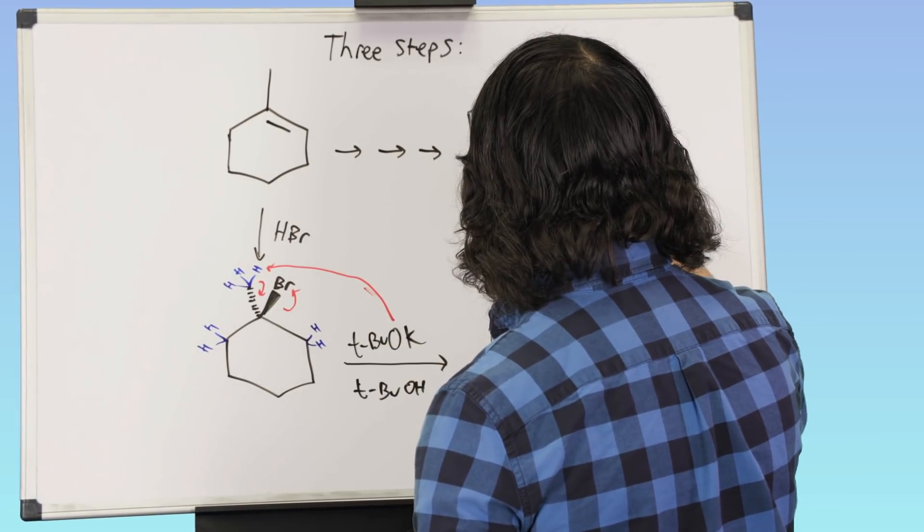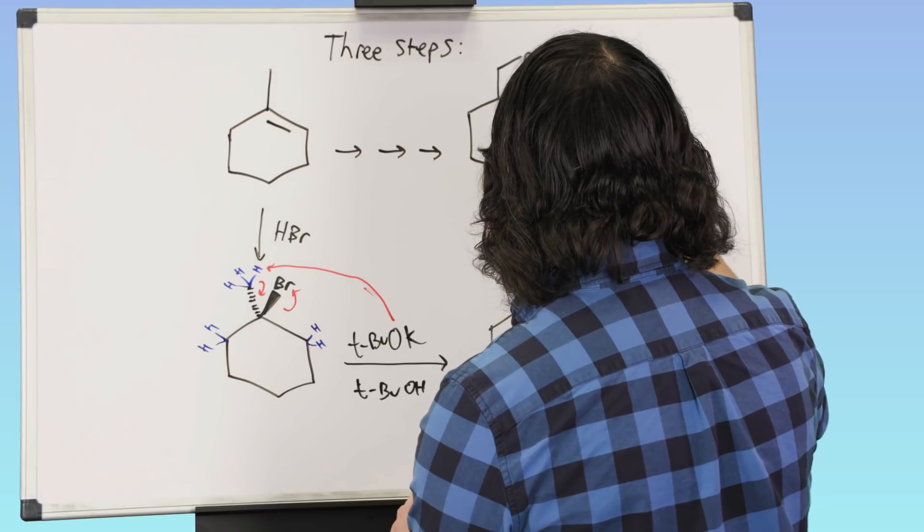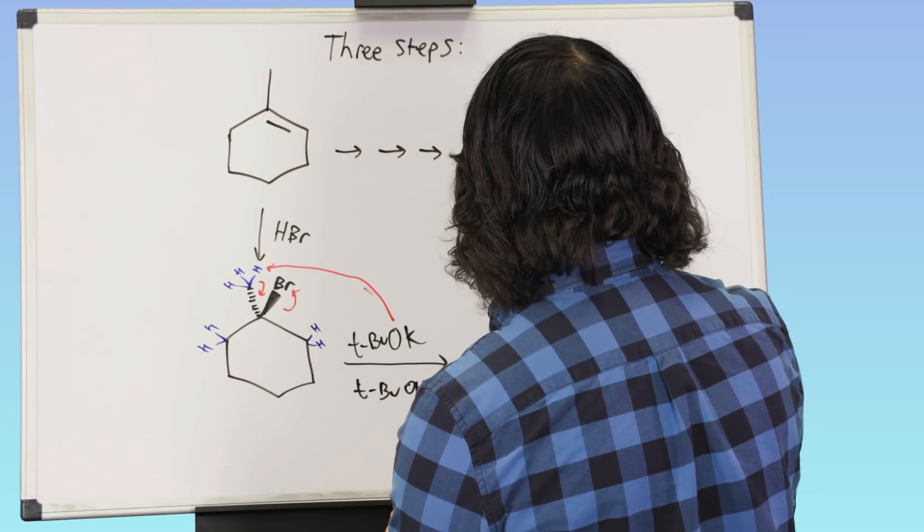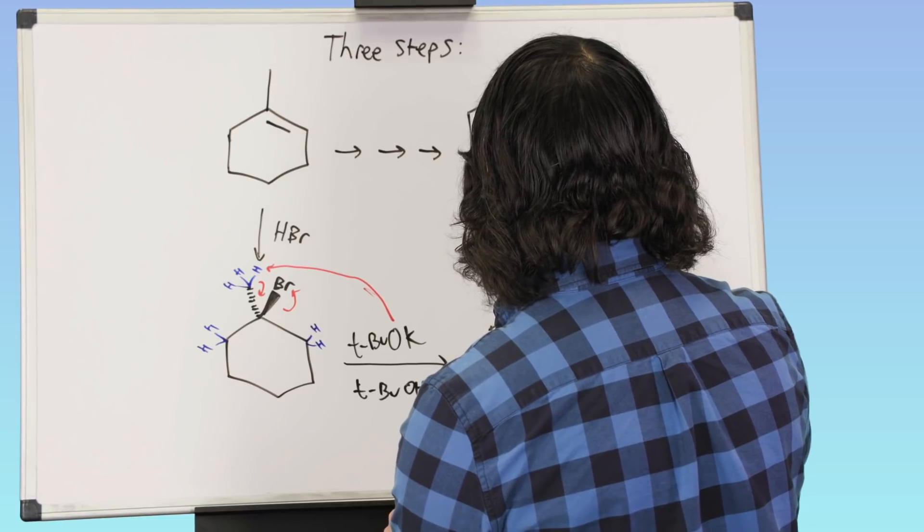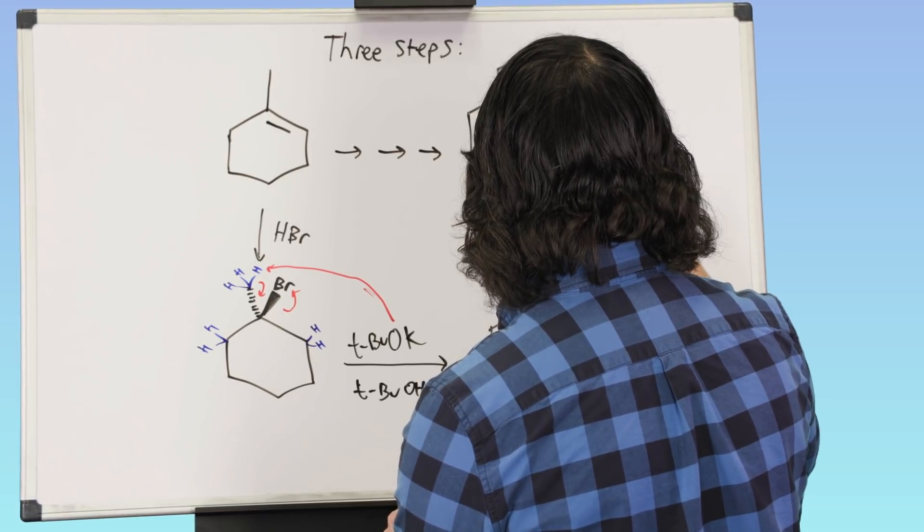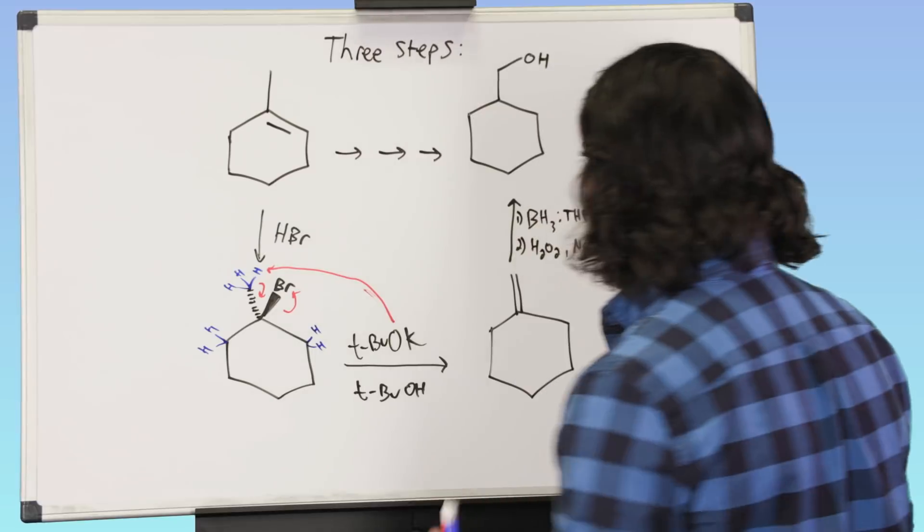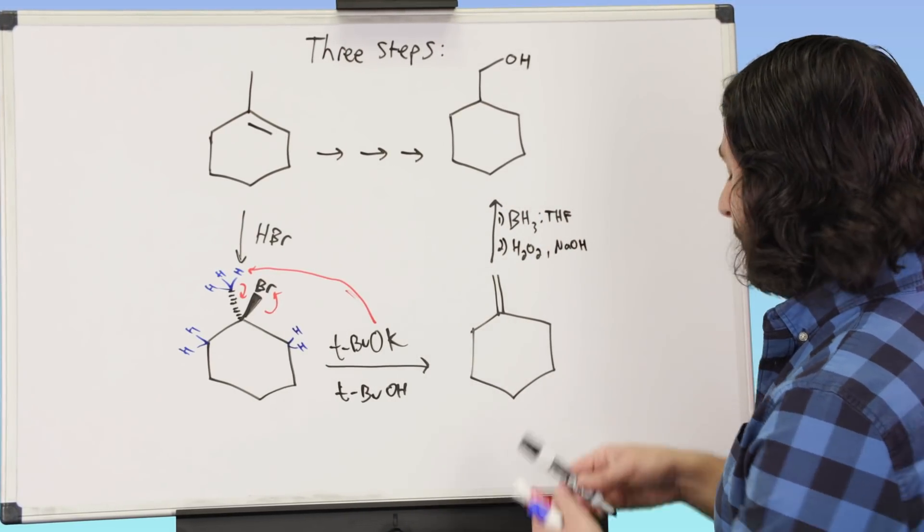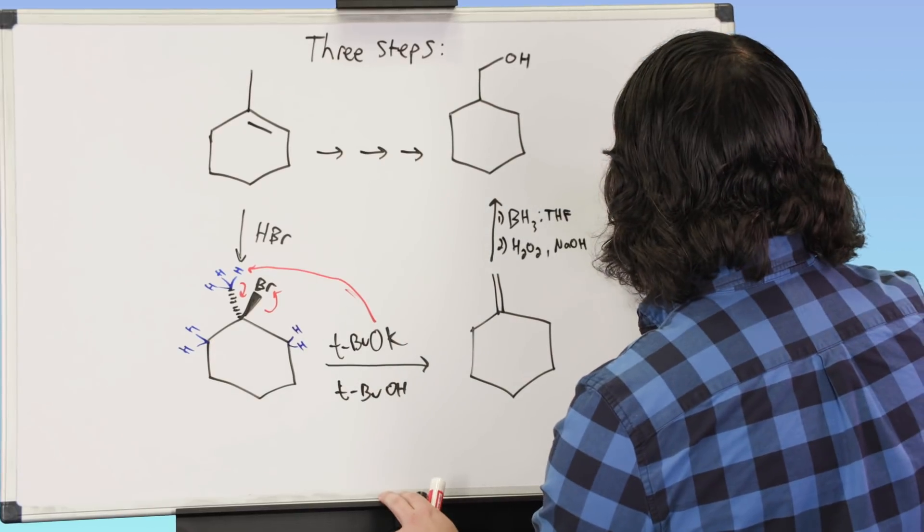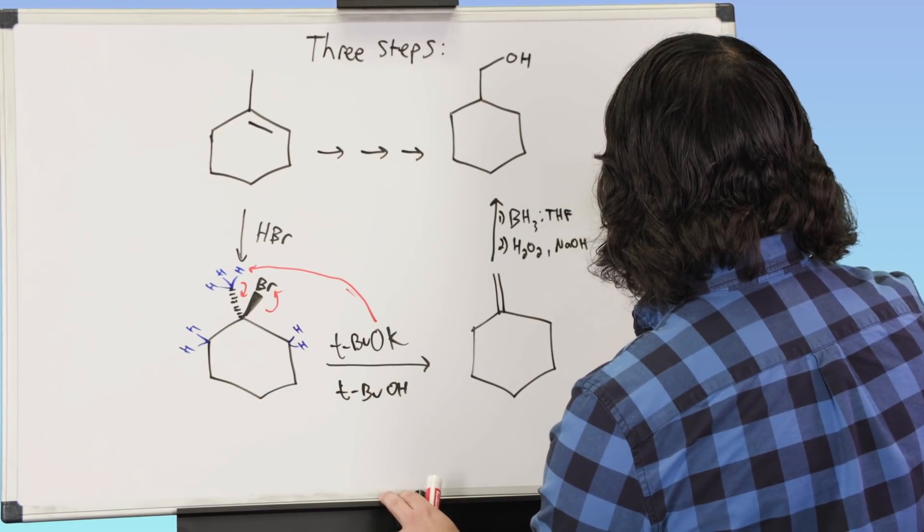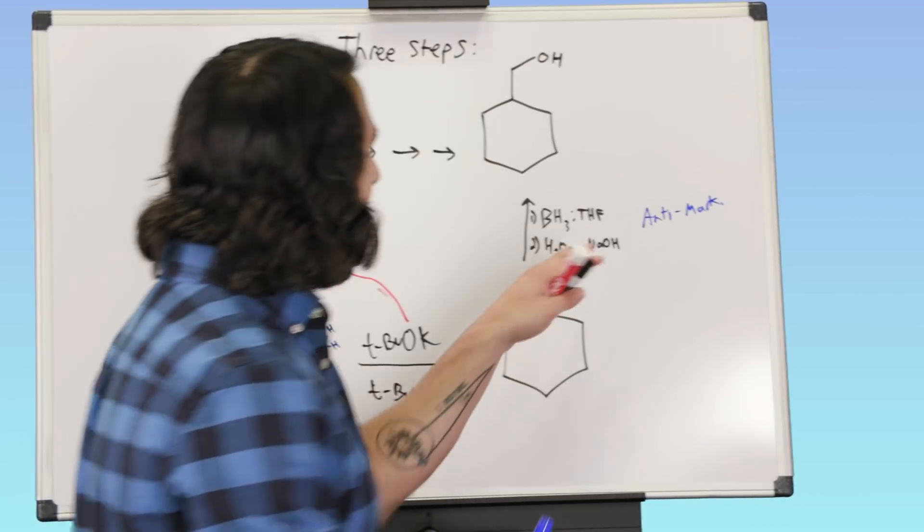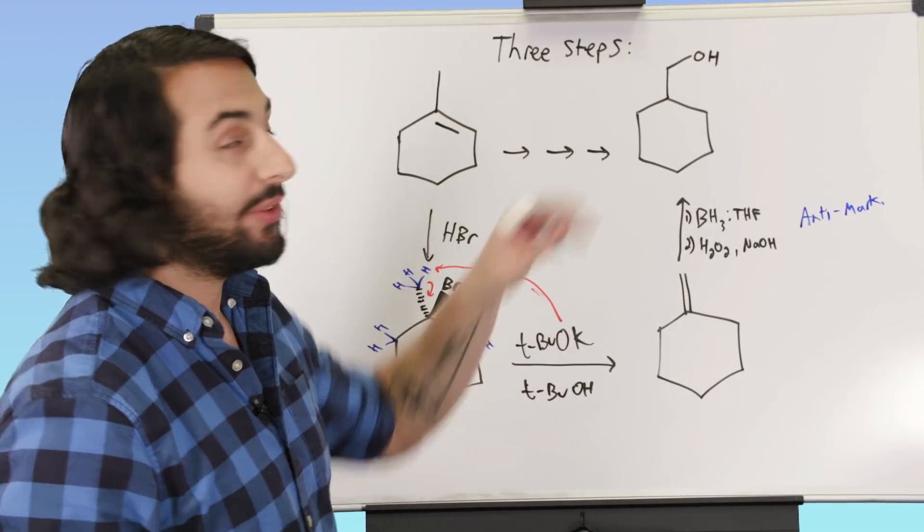So we could put in these conditions here, that would be our hydroboration and then we could do our oxidation, and we did go over that reaction and that mechanism in another tutorial, and so that would be our anti-Markovnikov hydration, and that is indeed going to get us to this desired product.